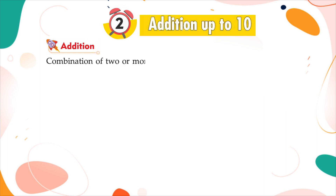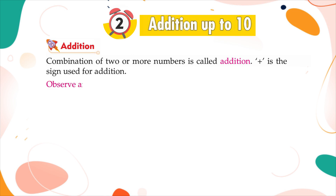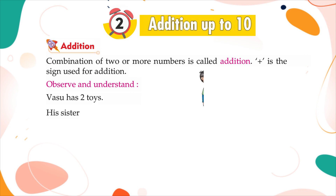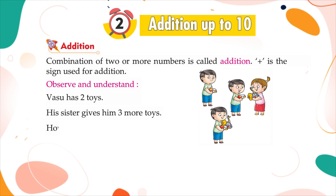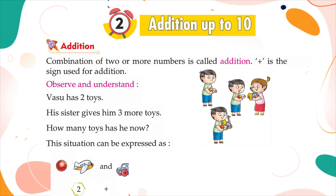Combination of two or more numbers is called addition. Plus is the sign used for addition. Observe and understand: Vasu has two toys. His sister gives him three more toys. How many toys has he now? This situation can be expressed as 2 plus 3 is equal to 5.